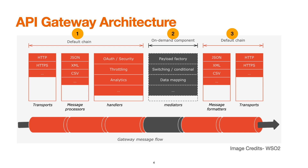WSO2 API Gateway supports different transport protocols like HTTP and HTTPS. It is also able to scale on-demand in cloud environments and is easily pluggable for non-cloud environments.